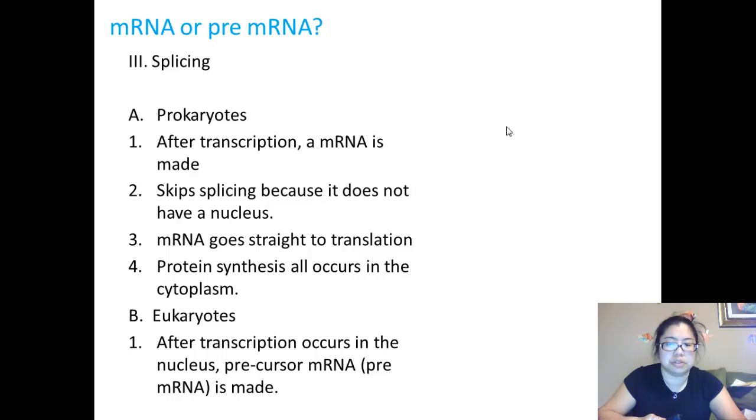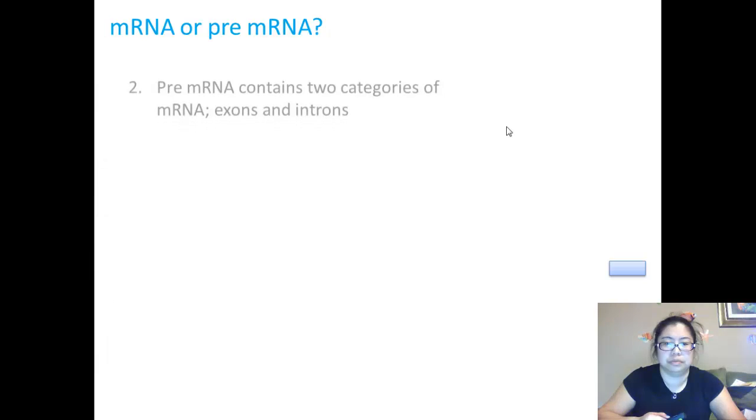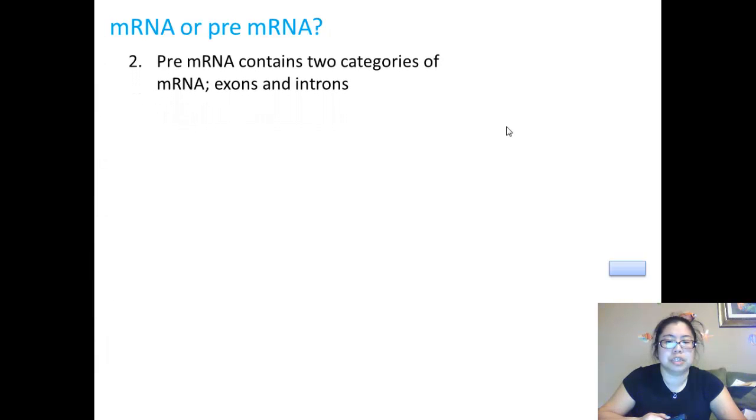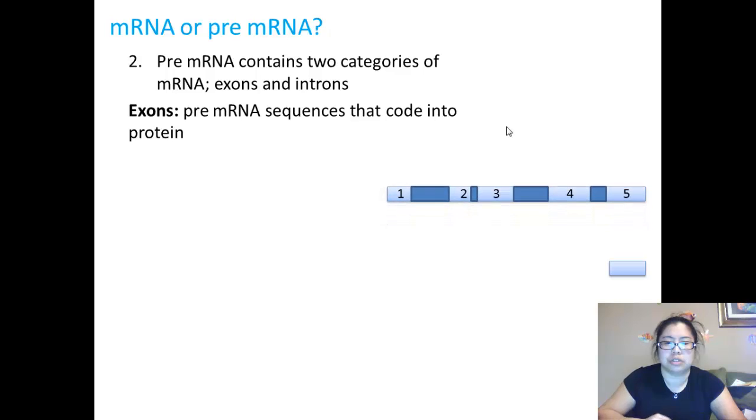In eukaryotes, after transcription occurs in the nucleus, the precursor mRNA or pre-mRNA is made. The pre-mRNA contains two categories of mRNA: exons and introns. Exons are pre-mRNA sequences that code into protein, and these are shown here in the light blue.